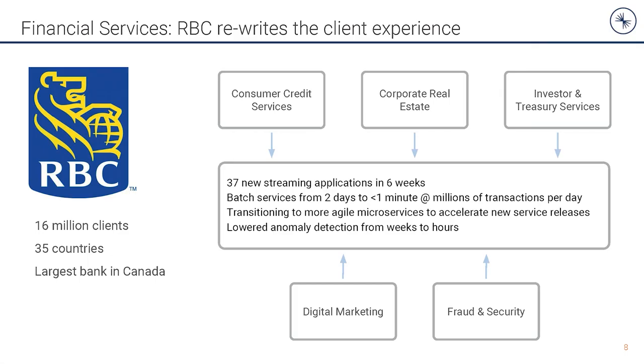In an entirely different industry, we have Royal Bank of Canada, which is the largest bank in Canada with more than 16 million customers. Banking is another industry in transition. Much of the customer's experience of a bank is shifting from a visit to your local branch to a digital experience on a browser or mobile device. Kafka enabled RBC to unlock data stored in mainframes and integrate the online experience in real time. As they began adopting Kafka they quickly realized the value of offering this capability as a service across multiple lines of business, seeing the fastest adoption of a software stack they'd ever seen — with 37 applications adopting it within six weeks. They were able to accelerate a series of batch-oriented capabilities from two days to seconds, enabling new and better services for their customers.